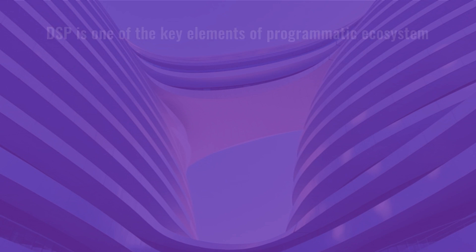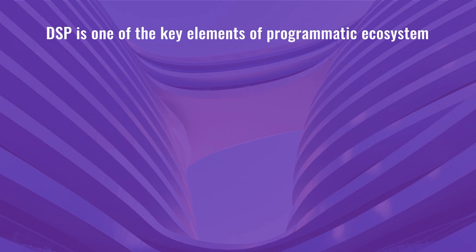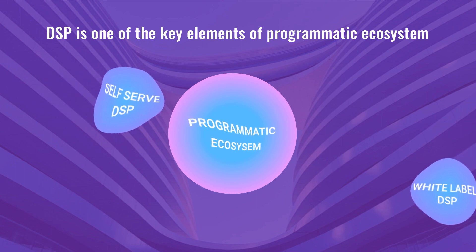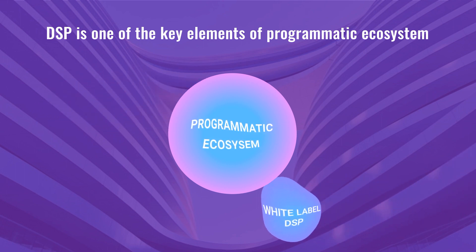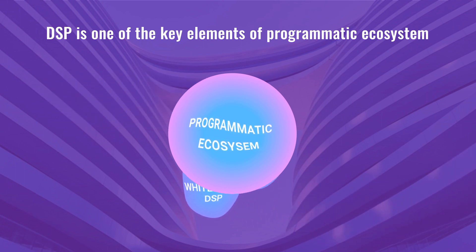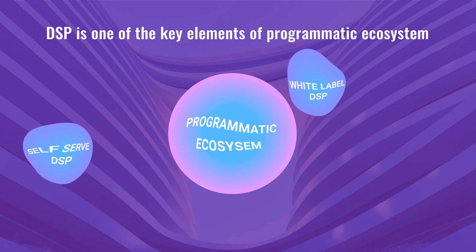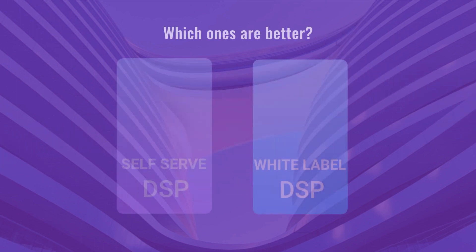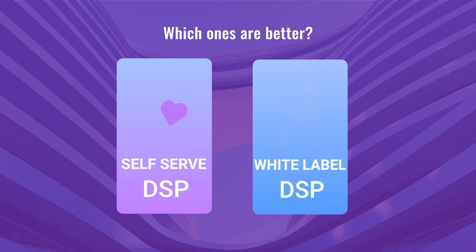The programmatic advertising ecosystem consists of multiple elements. One of the key elements in this programmatic world are demand-side platforms, or DSPs. There are different types of DSPs, and self-serve DSPs and white-label DSPs are the most abundant and often the most mixed up. In this video, we'll briefly explain the main difference between self-serve and white-label DSPs, and by the end, you'll understand which one is better for your media buying needs.